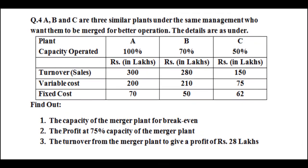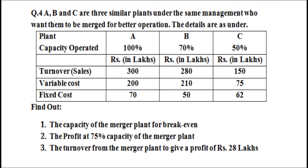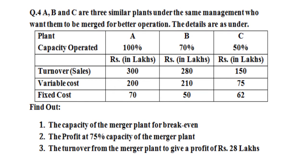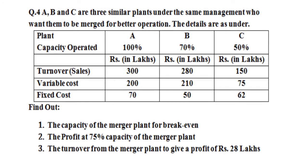Question number four is the most important question, and this kind of question is frequently asked in examination as far as CVP analysis is concerned. A, B, C are three similar plants — it's called a problem of merging. Under the same management who wants them to merge for better operation. You are required to find out three things: one, the break-even point of the merged plant; two, the capacity of the merged plant at 75% with no profit; and three, if you want 28 lakh rupees profit, what is your turnover.